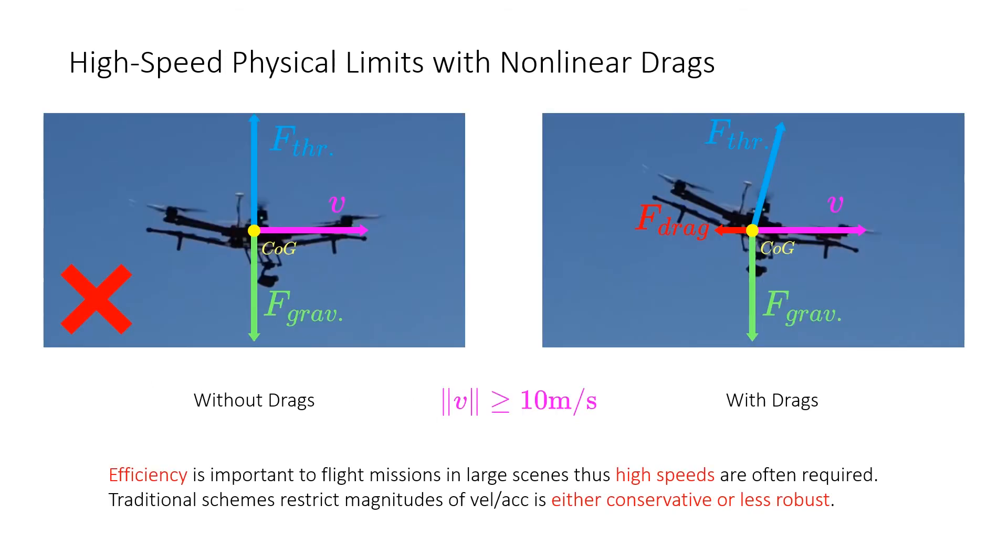As for physical limits, a robust planner should consider relatively high-fidelity models. Traditional planners usually use a point-mass model and do not consider drag forces. They often underestimate actual physical limits. Simply restricting magnitudes of velocity and acceleration can be either conservative or less robust.